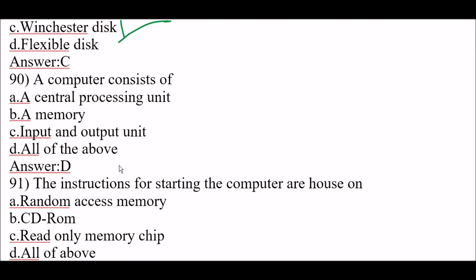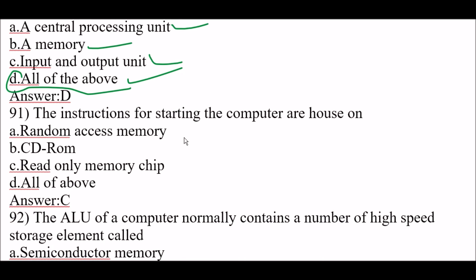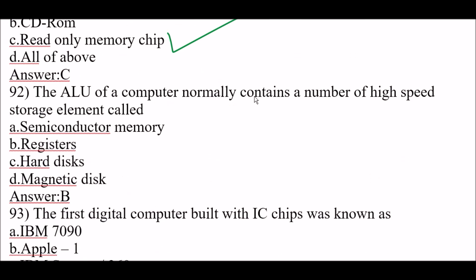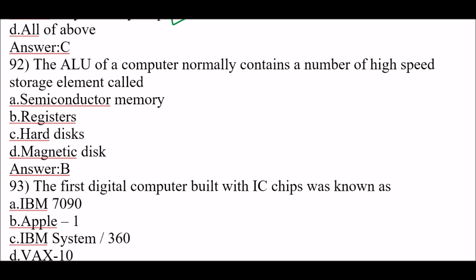Next question: a computer consists of a central processing unit, memory, and input and output units. The right answer is option D, all of the above. Next question: the instructions for starting the computer are housed on a read-only memory chip — option C. Next question: the ALU of a computer normally contains a number of high-speed storage elements called registers.